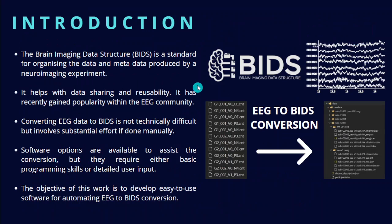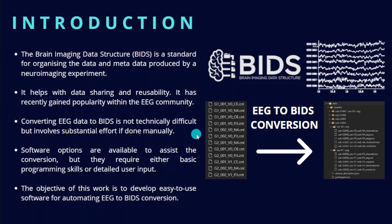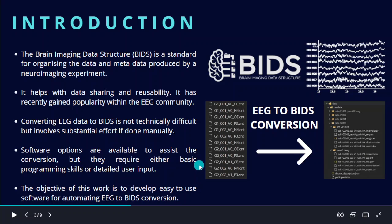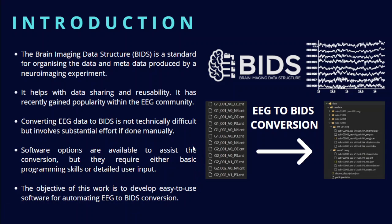The Brain Imaging Data Structure, also known as BIDS, is a standard for neuroimaging data that has gained popularity within the EEG community. Converting to this standard is not difficult, but it requires substantial effort if done manually. The purpose of this work is to automate the conversion procedure without requiring detailed input or programming skills from the user.